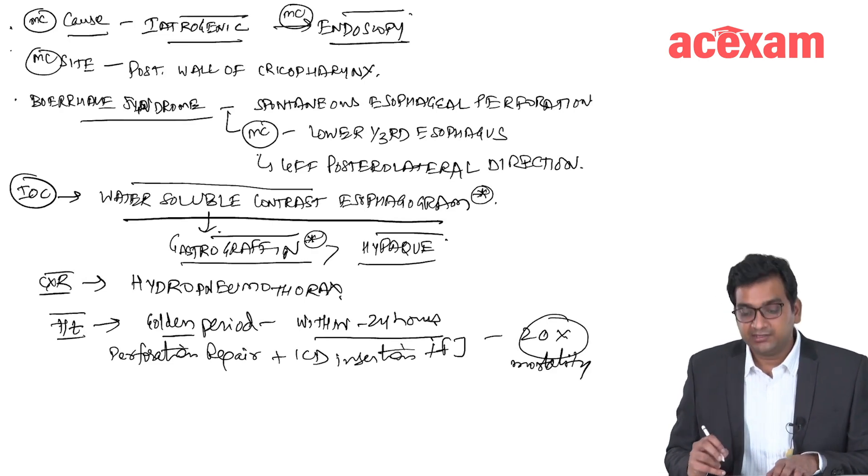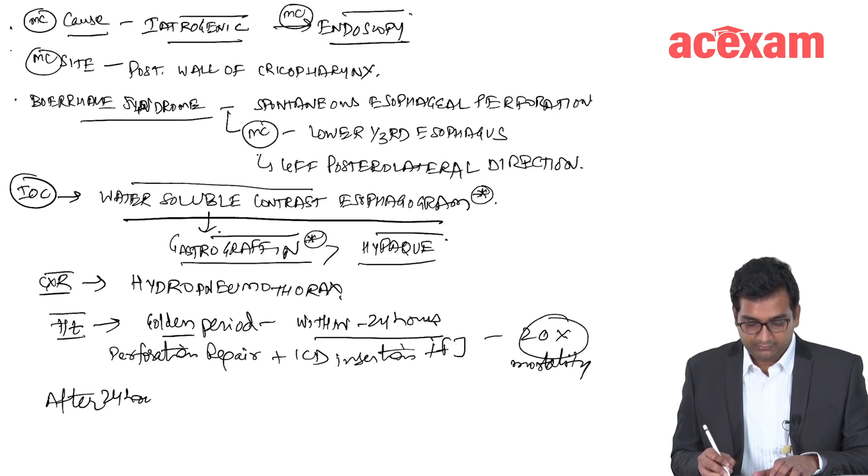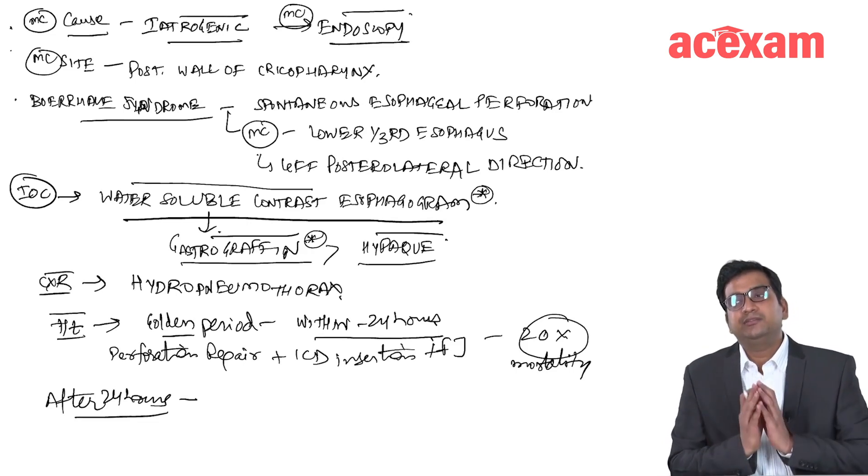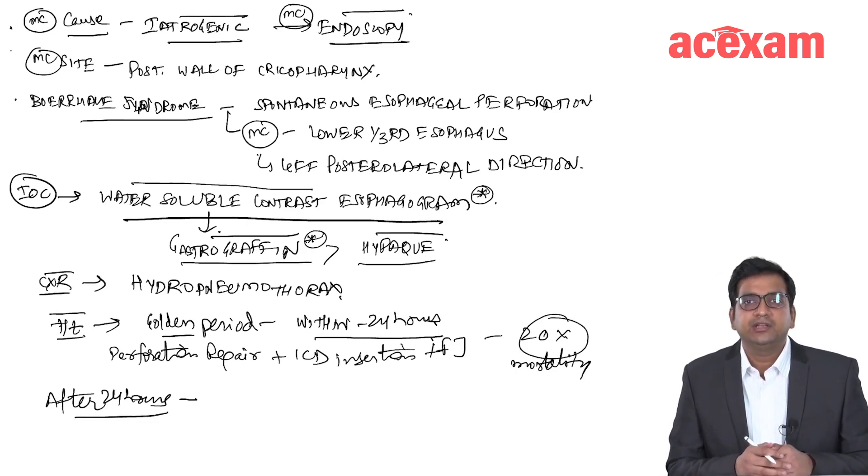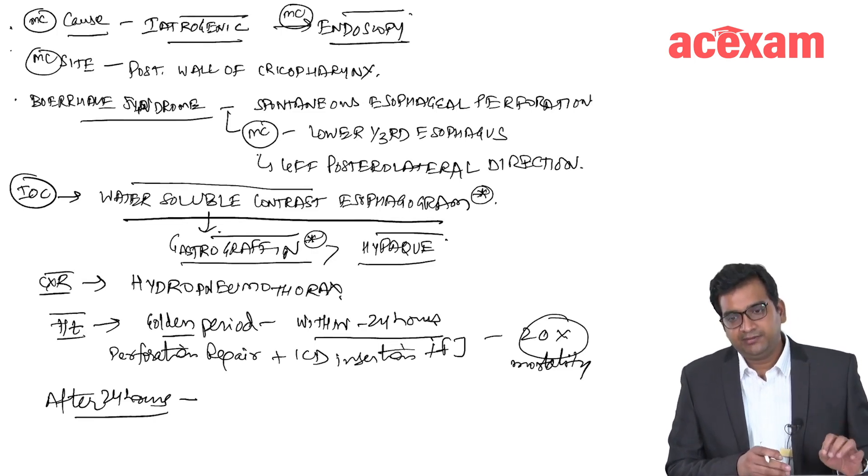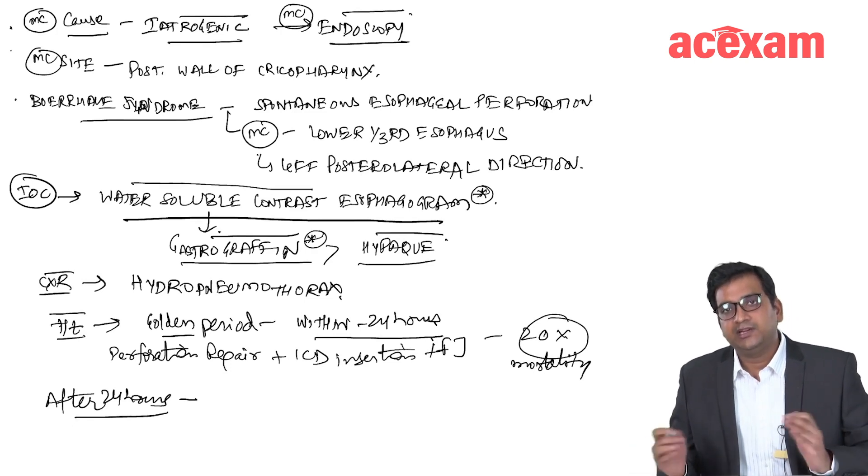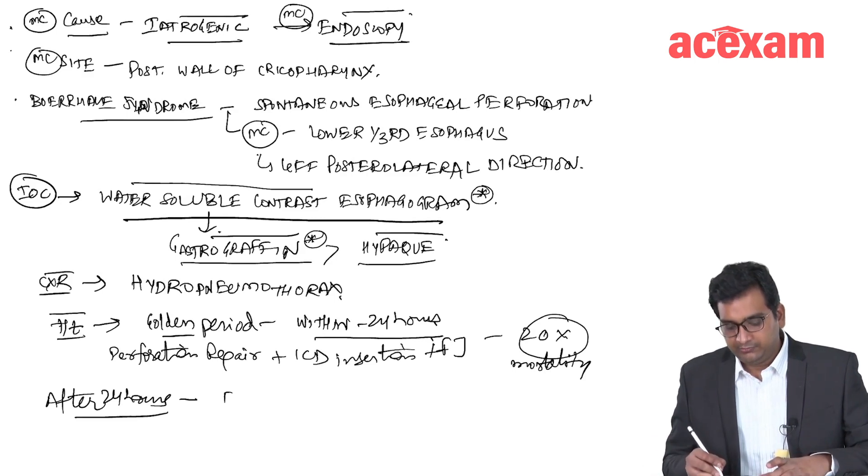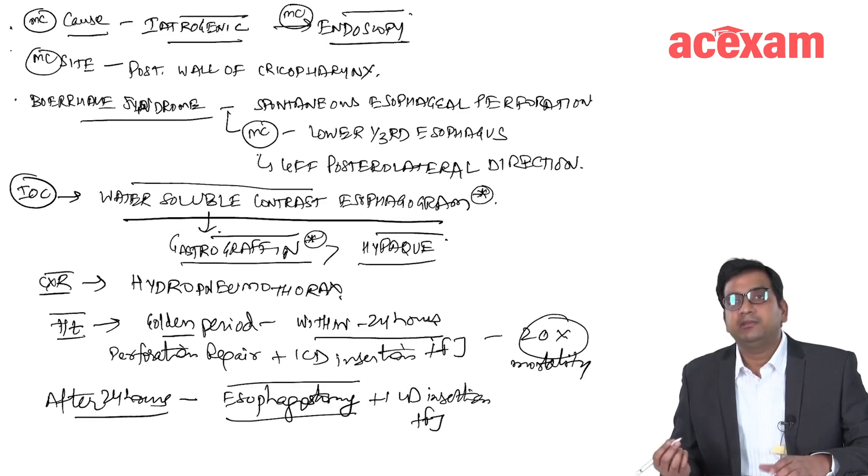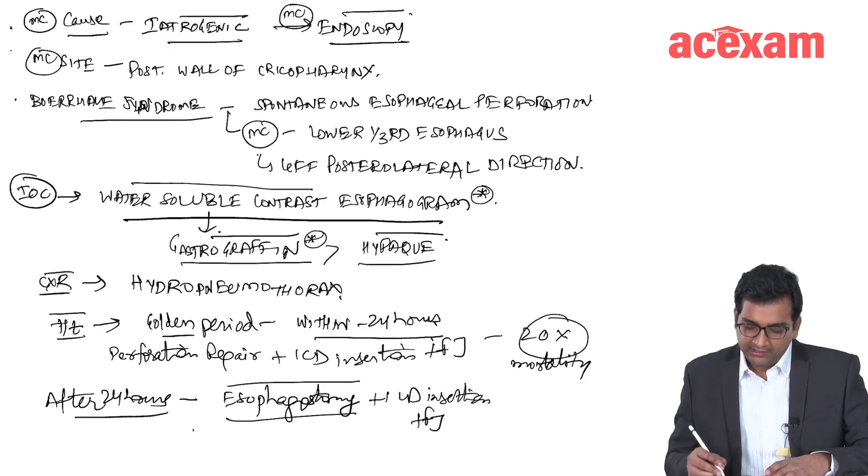In case if the diagnosis is missed and we identify the diagnosis after 24 hours, in this case the wall is very friable, it is not going to hold any sutures. The best thing is to do esophagostomy, to take the esophagus outside of the body surface to control the damage and to control the further damage. So we will go for esophagostomy in these cases, along with the ICD insertion and FJ. We will not attempt for primary closure in these cases or the perforation repair in these cases. The mortality is more than 50 percent in these cases.